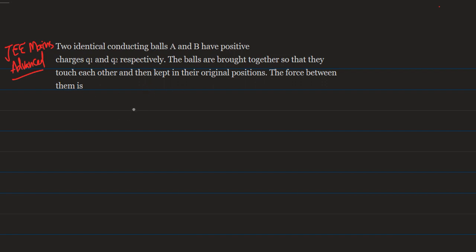So students, in this problem we have two conducting balls. One ball has charge Q1, the other has charge Q2, and both are identical balls. Let's suppose they are separated by distance R. So the force between them is simply F equals K Q1 Q2 by R square. Let's suppose this is equation 1.